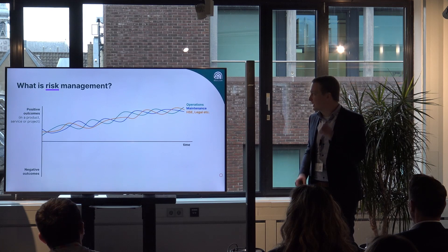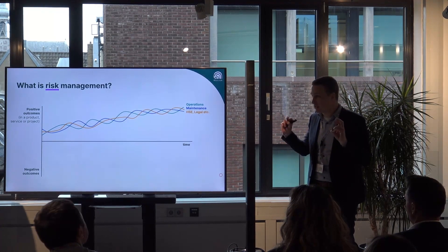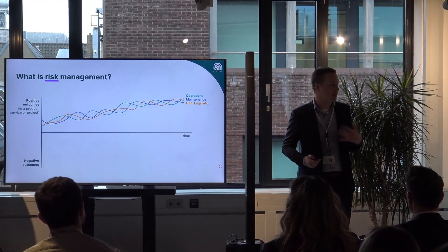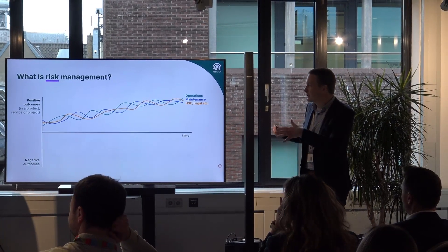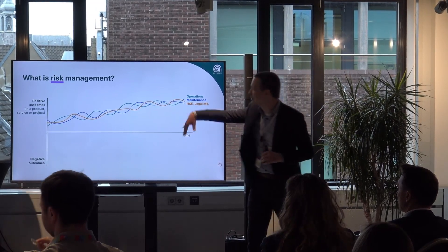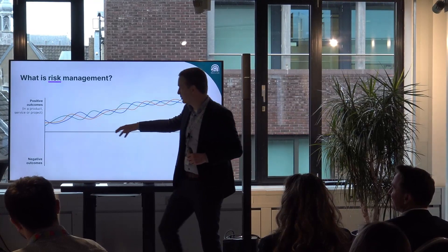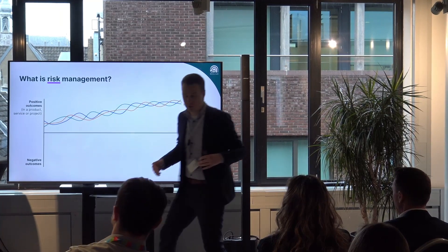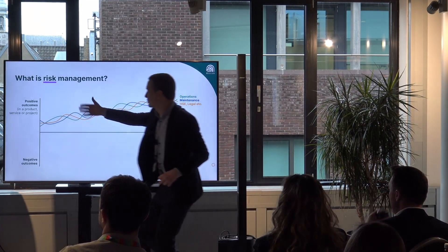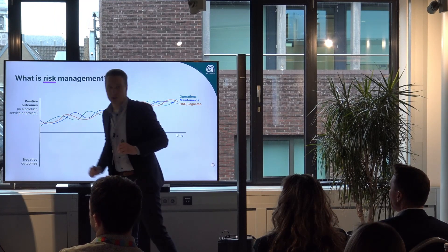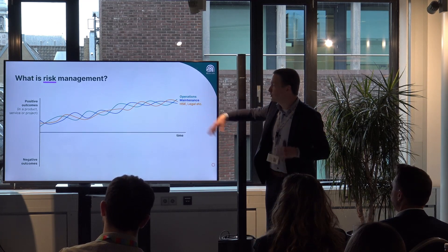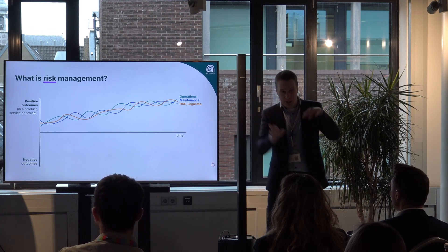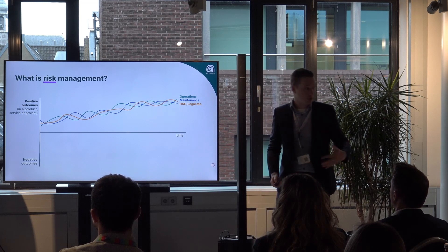If you take one step back and sort of think about what risk management is, or even what risk is — I agree with Victor, it's probably not a risk matrix, but that's a little bit too simplistic. I made this picture, which I think is much nicer because it has curved lines in it. If you think about risk as a possible distribution of positive outcomes and negative outcomes that you can achieve as an organization — you want positive outcomes, like either as a product, a service, or a project. And you have all these departments that work together to achieve those positive outcomes — operations, maintenance, agency, and legal — and if everything goes well, they work together in this nice dance to produce positive outcomes.